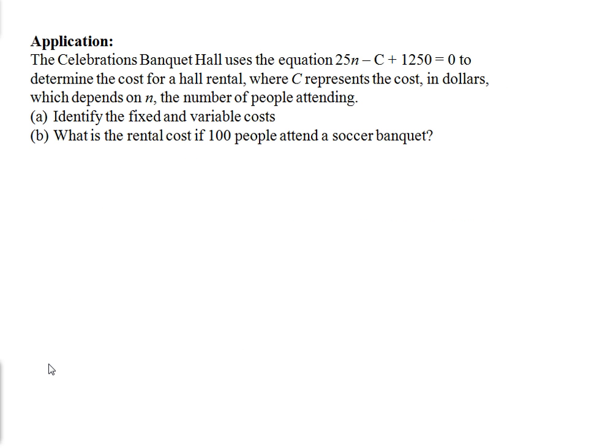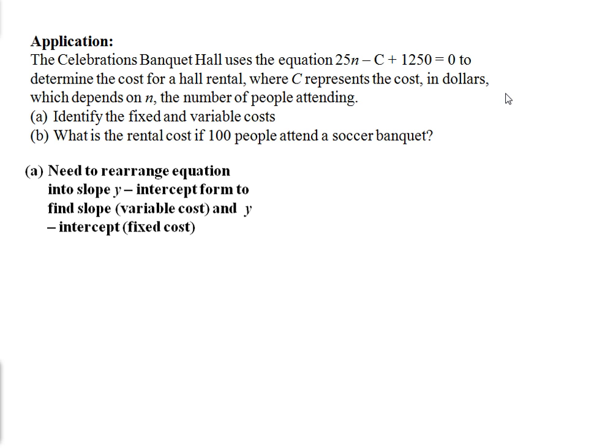So one more application using equations of the line in standard form. The Celebrations Banquet Hall uses the equation 25n minus c plus 1250 equals 0 to determine the cost for a hall rental, where c represents the cost in dollars, which depends on n, the number of people attending. So part a is to identify the fixed and variable costs. Now we have the equation in standard form. So in order to determine the fixed and variable costs, we need to put the equation into slope y-intercept form. So as long as we can rearrange it, we can find the m and b values, which are the fixed and variable costs, very easily.